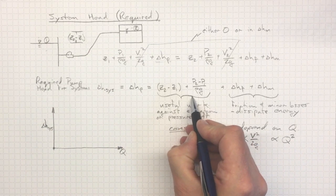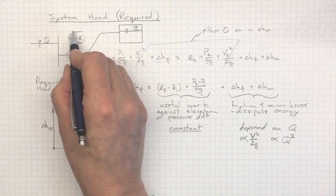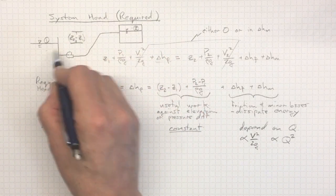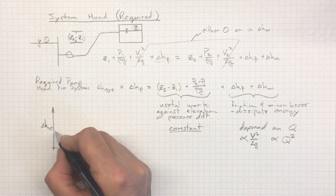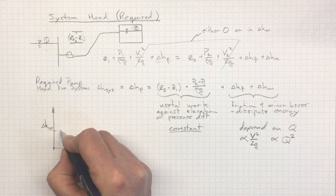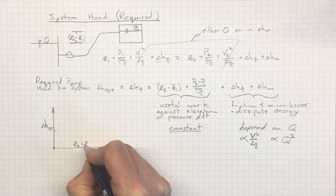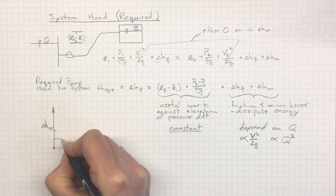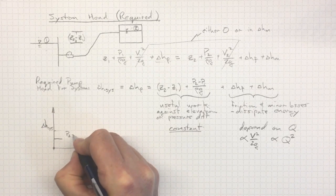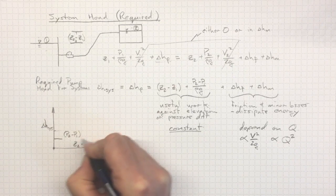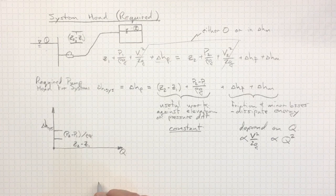But we'll still have to have enough head rise to overcome this elevation difference and this pressure difference before we'll get any flow at all. So, at low flow or no flow, we're still going to have to overcome Z2 minus Z1. So, let's say that's that much. And we're also going to have to overcome P2 minus P1 over rho G. Let's say that's that much.